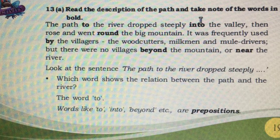All of you take your text and we can do the activities. Read the description of the path and take note of the words in bold. The path to the river dropped steeply into the valley, then rose and went round the big mountain. It was frequently used by the villagers, the woodcutters, milkmen and mule drivers, but there were no villages beyond the mountain or near the river.